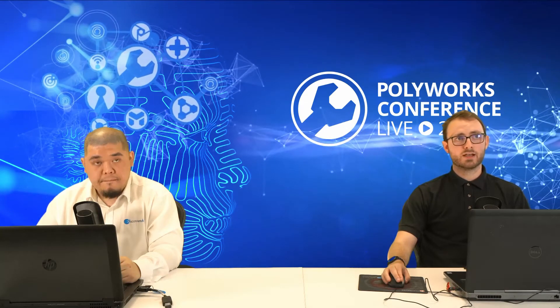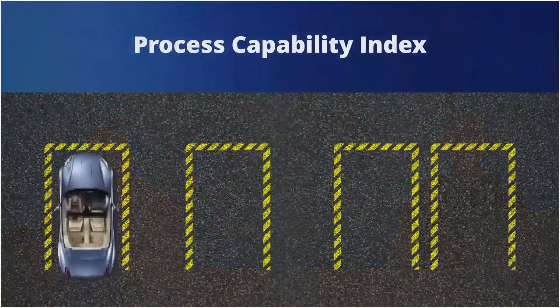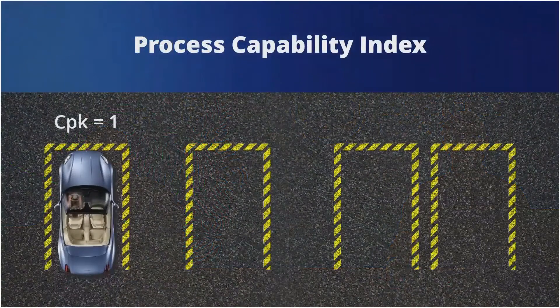One good way to answer that question is to look at the process capability index. To give a brief explanation of the CPK, I'll use the story of parking a car in a garage. In this image, the car represents the process variation while the garage represents the specification limits.